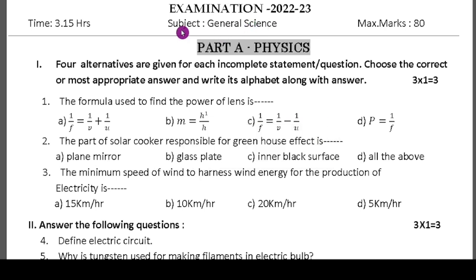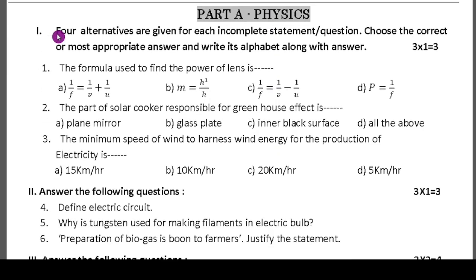So 2023 subject science, maximum marks 80, and time 3 hours 15 minutes. First we have to go with Part A physics, Part B chemistry, and Part C biology. In that first main, four alternatives are given for each incomplete statement or question. Choose the correct or most appropriate answer and write its alphabet along with the answer. Three questions will be there, multiple choice questions, and you have to write the answer with the alphabets.